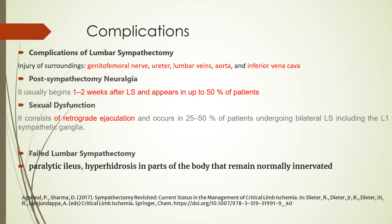Complications of lumbar sympathectomy include injury to structures such as the genitofemoral nerve, ureter, lumbar vessels, aorta, and inferior vena cava. Post-sympathectomy neuralgia usually begins 1 to 2 weeks after lumbar sympathectomy and appears in up to 50% of patients. Sexual dysfunction, consisting of retrograde ejaculation, occurs in 25% to 50% of patients undergoing bilateral lumbar sympathectomy including the L1 level. Other complications include failed sympathectomy, paralytic ileus, hyperhidrosis, and compensatory sweating in areas that remain normally innervated.